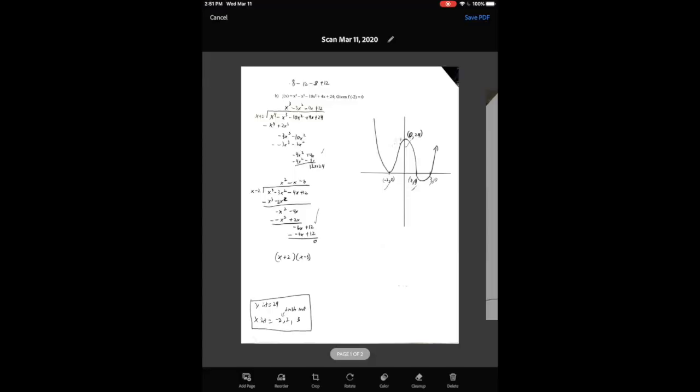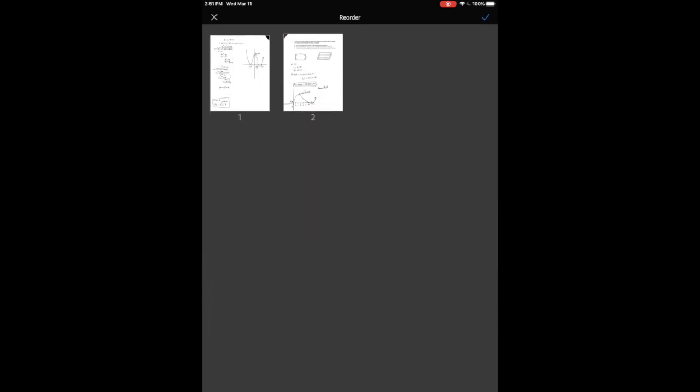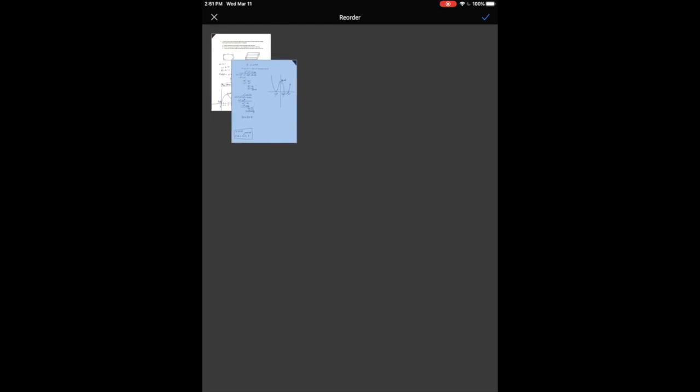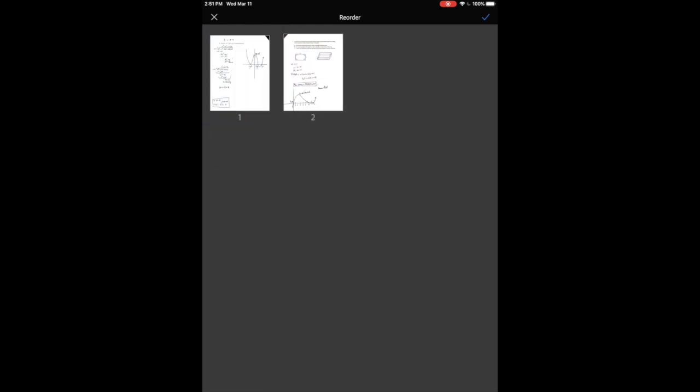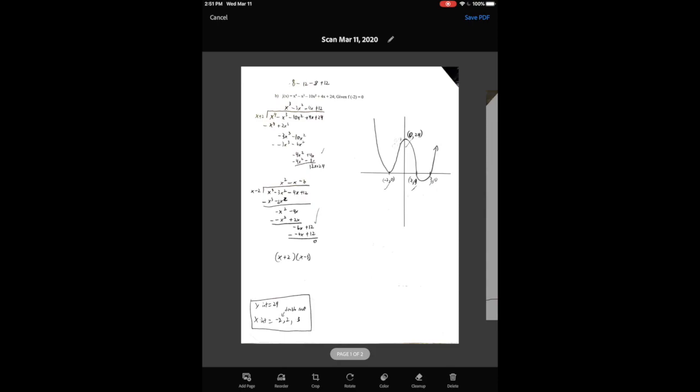And here is where I can do some editing. I can add a page if I forgot to. I'm looking at the bottom here, I can reorder the pages. So I'll tap on that. Let's say I put them in the wrong order. I'm just going to tap and hold and then move these around, which is a nice feature. But I have the right order.